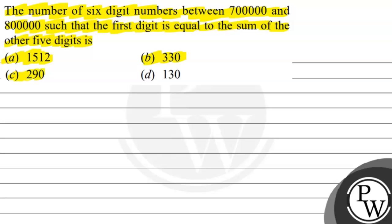Option C: 290. Option D: 130. Let's see how many six digit numbers will be between 7 lakhs and 8 lakhs such that the first digit is equal to the sum of the remaining 5 digits.